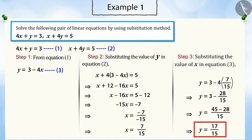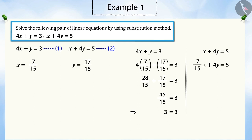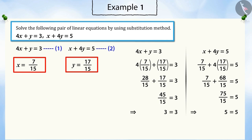We substitute the values of x and y in equations 1 and 2. And on solving, it can be proved that x is equal to 7 by 15 and y is equal to 17 by 15. This is a unique solution to this pair of linear equations.